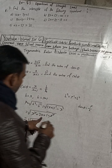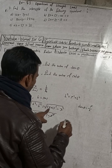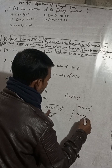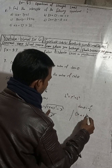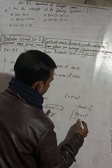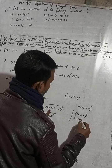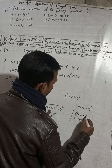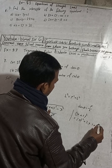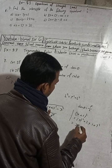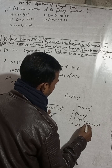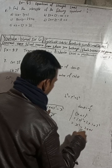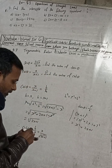Here one step was skipped. You can write: x plus 1 whole square equals x squared plus 2 into x into 1 plus 1 squared. When we solve this, it becomes x squared plus 2x plus 1. I have done the same here — the same expansion steps apply.